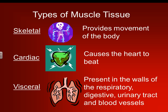And then visceral — present in the walls of the respiratory, digestive, urinary tract, and blood vessels. Viscer refers to internal organs, and AL is pertaining to — so pertaining to the internal organs. This muscle tissue is inside your respiratory system, digestive tract, urinary tract, and blood vessels. Whenever your stomach growls because it's churning and those stomach muscles are moving, that is considered a visceral muscle type.